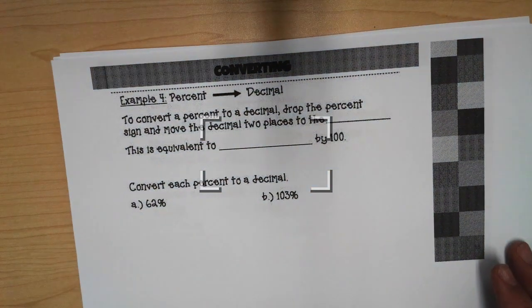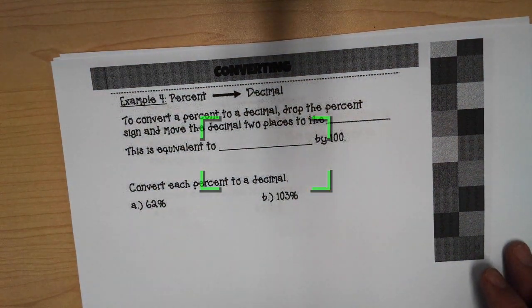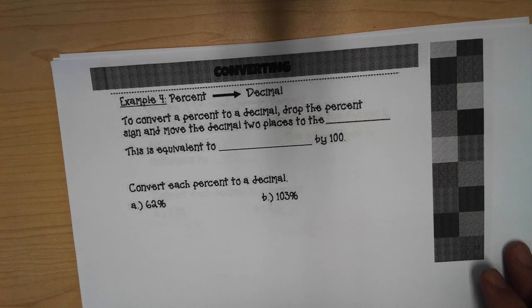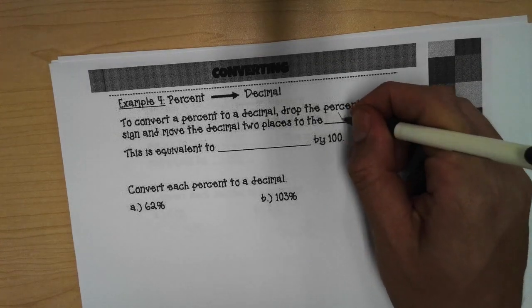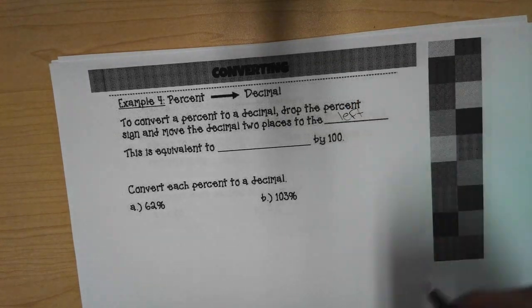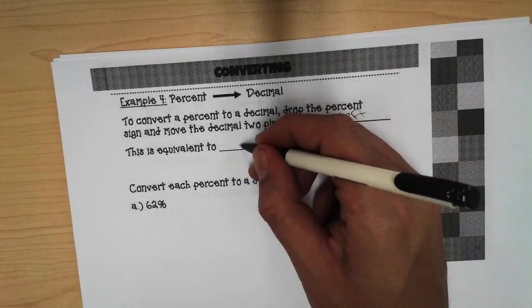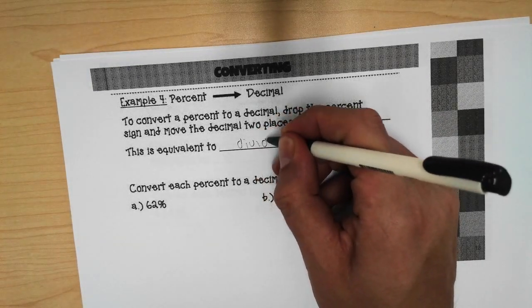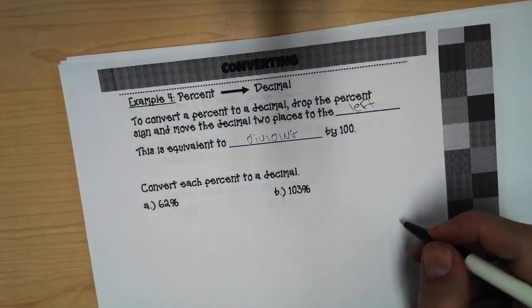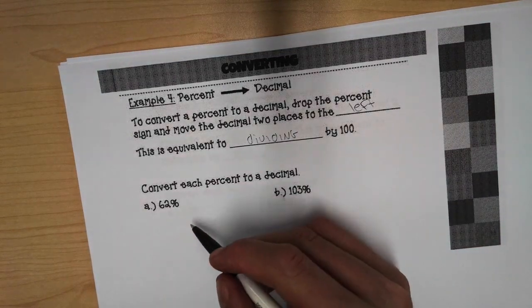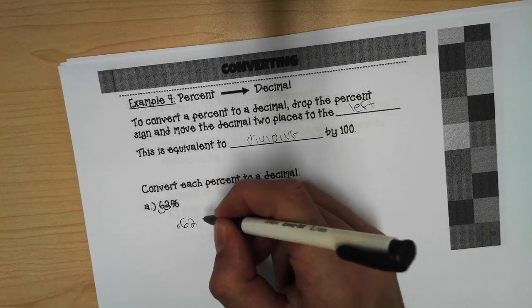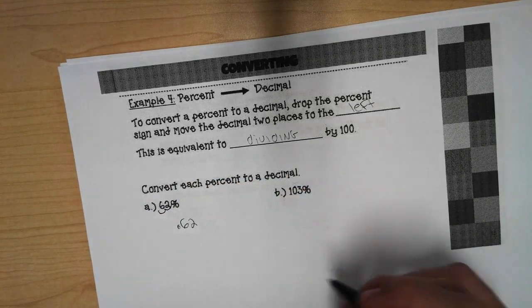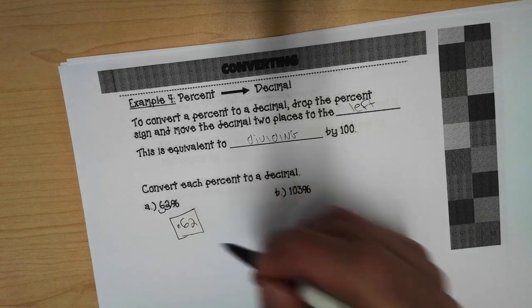Now let's convert a percent to a decimal. To convert a percent to a decimal, drop the percent sign and move the decimal two places to the left. This is equivalent to dividing by a hundred. So if we have 62 percent, you move it two places to the left, and we get 62 hundredths. So A is 62 hundredths.